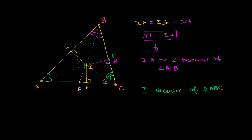It seems worthwhile that we should call this something special — and that's why I called it I. We call I the incenter of triangle ABC. You'll see why it's called the incenter in a moment. When we talked about the circumcenter, that was the center of a circle circumscribed about the triangle. I is the center of a circle that can be put inside the triangle, tangent to the three sides. We've established that I is equidistant from each of the sides, so if you set up a circle with I as the center with radius equal to that distance, you get a circle that looks something like this.